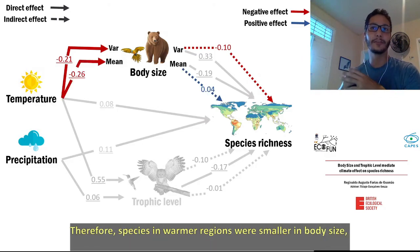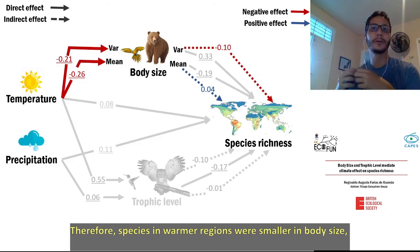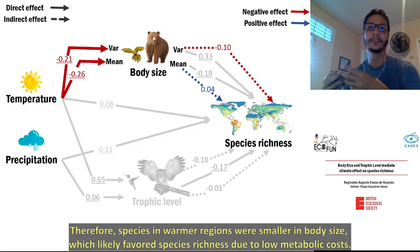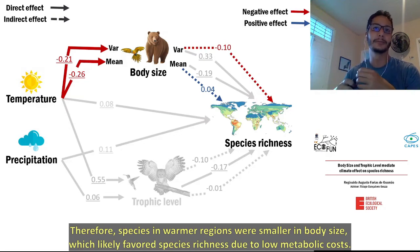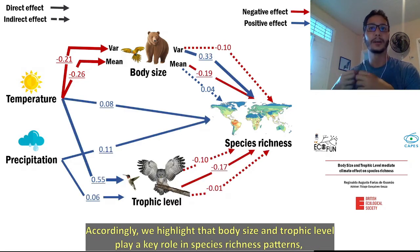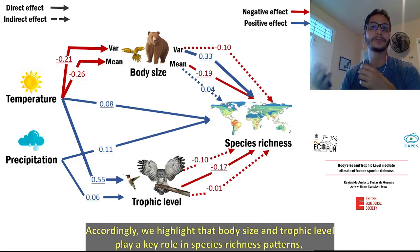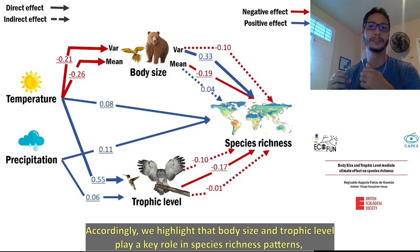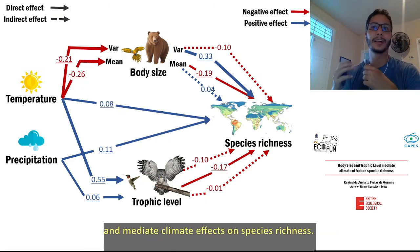Therefore, species in warm regions were smaller in body size, which likely favored species richness due to low metabolic costs. Accordingly, we highlight that body size and trophic level play a key role in species richness patterns and mediate climate effects on species richness.